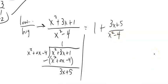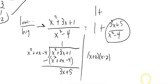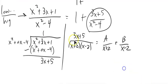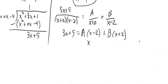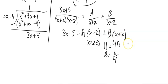Now I can proceed with partial fractions on that remainder part. The 1 is separate; I'll remember there's a 1 plus here. The x squared minus 4 factors to x plus 2 times x minus 2. Multiplying through by the denominator: a goes with x minus 2 and b goes with x plus 2. Let x equal 2: 3 times 2 plus 5 is 11, and on the right I have 4b, so b equals 11 fourths. Let x equal negative 2: negative 6 plus 5 is 1, and on the right I have negative 4a, so a equals negative 1 fourth.